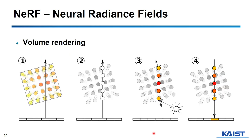Volume rendering is a rendering technique using the radiance field. If we want to generate an image from a radiance field, volume rendering is the best choice. In the volume rendering pipeline, we cast a light ray, sample radiance field values along the ray, and integrate them to get the color of the desired pixel.